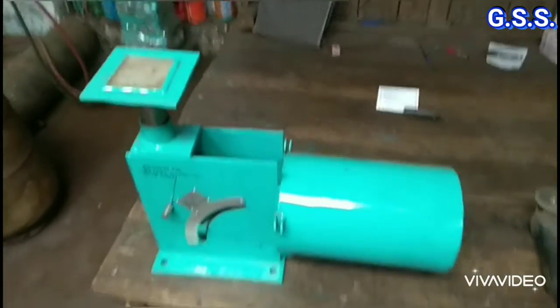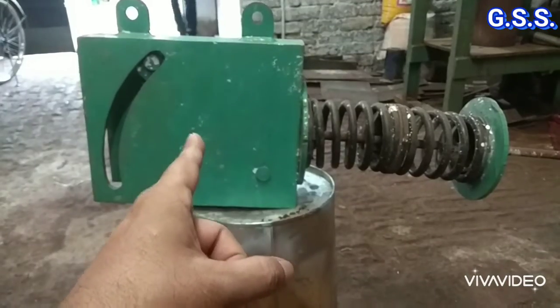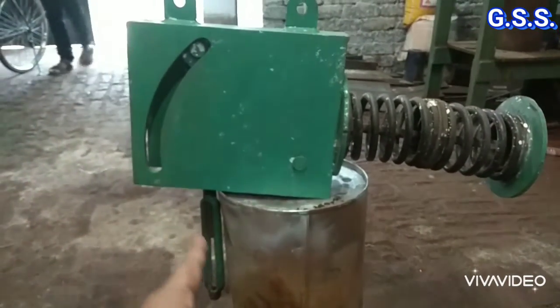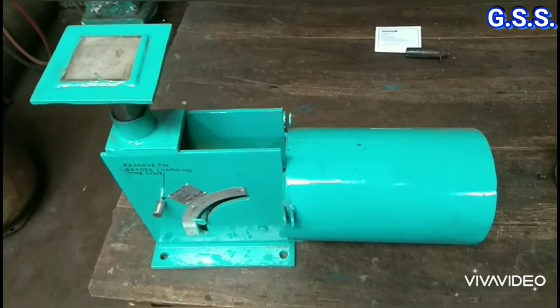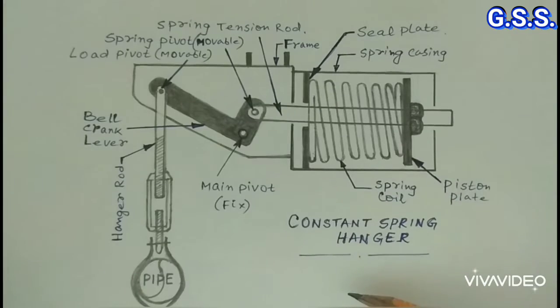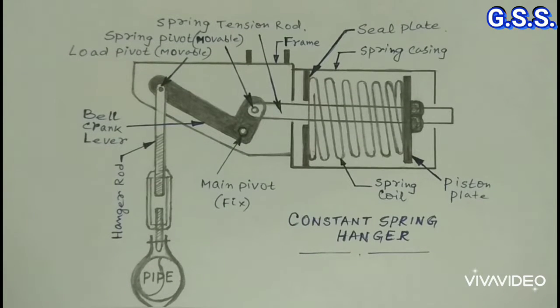This is a constant spring support and this is a constant spring hanger. Functionally, both are the same. The mechanism of a constant spring support or hanger is more complicated compared to variable spring support.